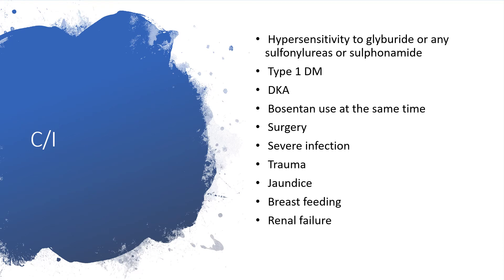Contraindications include hypersensitivity to glyburide or any sulfonylurea or sulfonamide. Anyone with hypersensitivity to sulfonamides cannot take sulfonylureas and vice versa. Do not give this medication in type 1 diabetes mellitus or diabetic ketoacidosis. Bosentan use at the same time is not allowed. Do not give this medication when the patient is about to undergo elective surgery or in the presence of severe infections — use insulin instead in those cases. Also contraindicated in traumatic situations, jaundice, breastfeeding, and renal failure, because accumulation of metabolites may lead to severe hypoglycemia.